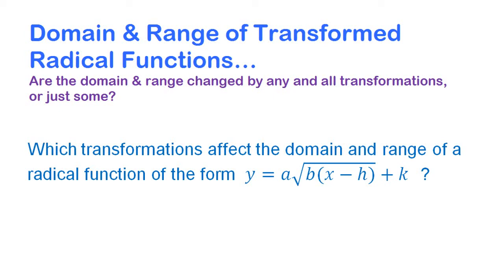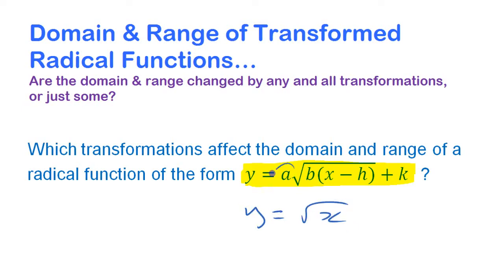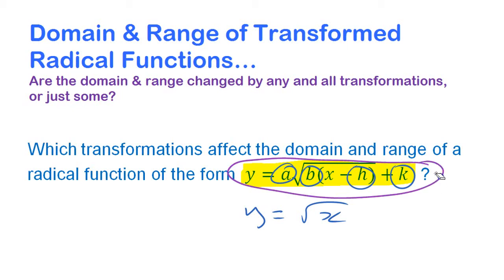As a follow-up to working with transformations and radical functions, we're going to look at how the domain and range are affected when you apply transformations to the basic square root function. If you're graphing a function of this format, where you've made changes to the basic y equals square root of x, how do each of those four parameters change the domain and the range? We'll use a dynamic graph that allows us to change each parameter one at a time.